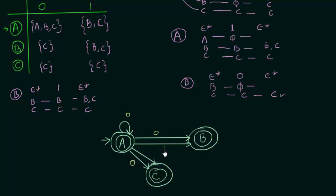B on input 0 goes to C. On input 1, B goes to both B and C. C on input 0 and 1 goes to C itself. This is how you convert an Epsilon NFA to its equivalent NFA. I hope it was clear to you. Thank you for watching and see you in the next one.